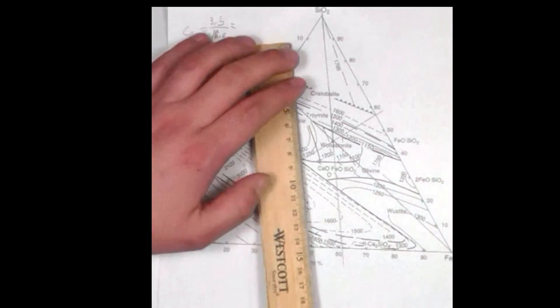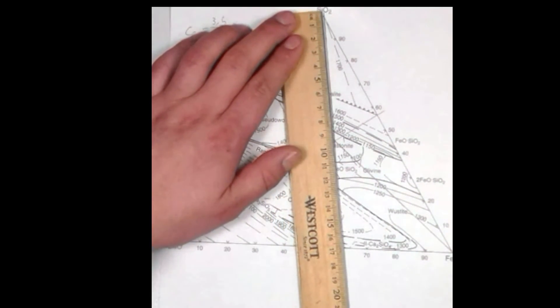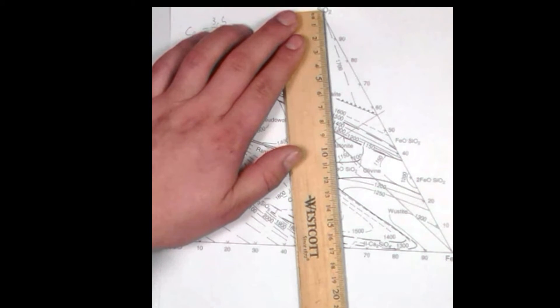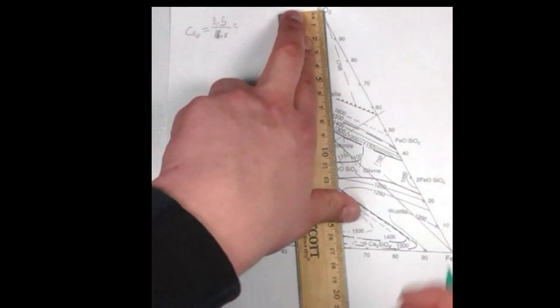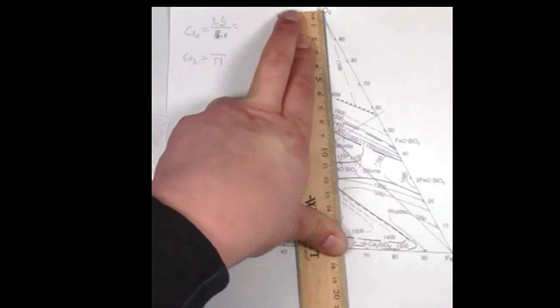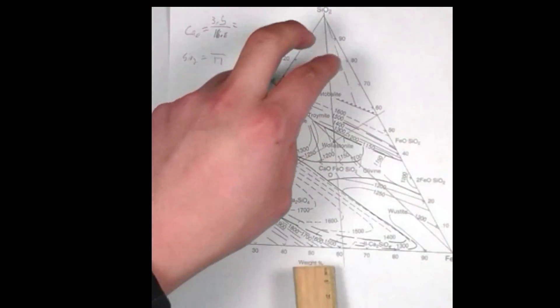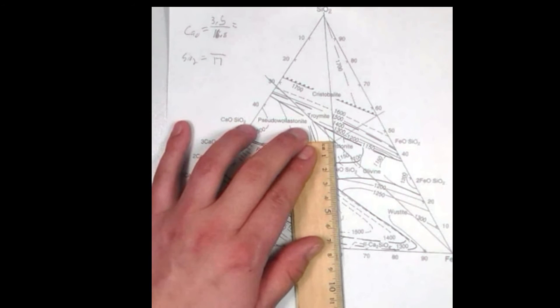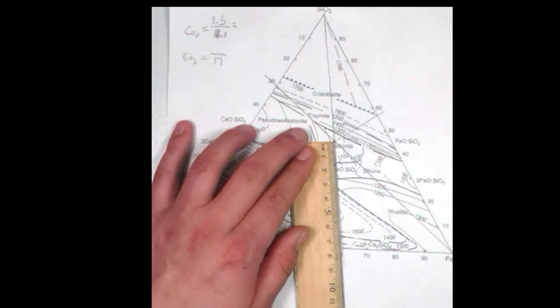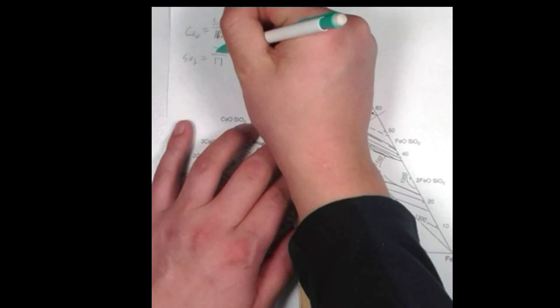For our SiO2, we will have 17 millimeters, and the distance from our zero side of the triangle to our point of interest is 7.5 centimeters.